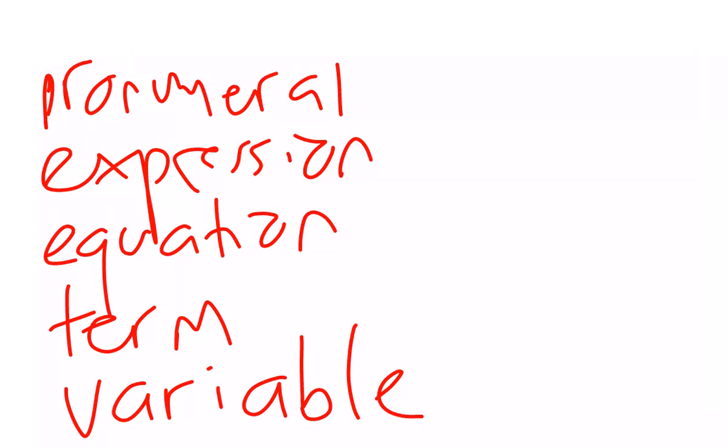A term, or an algebraic term, is a part of the expression that's separated out from other terms by plus and minus signs. And a variable is, of course, when our pronumeral is used because our value might change.